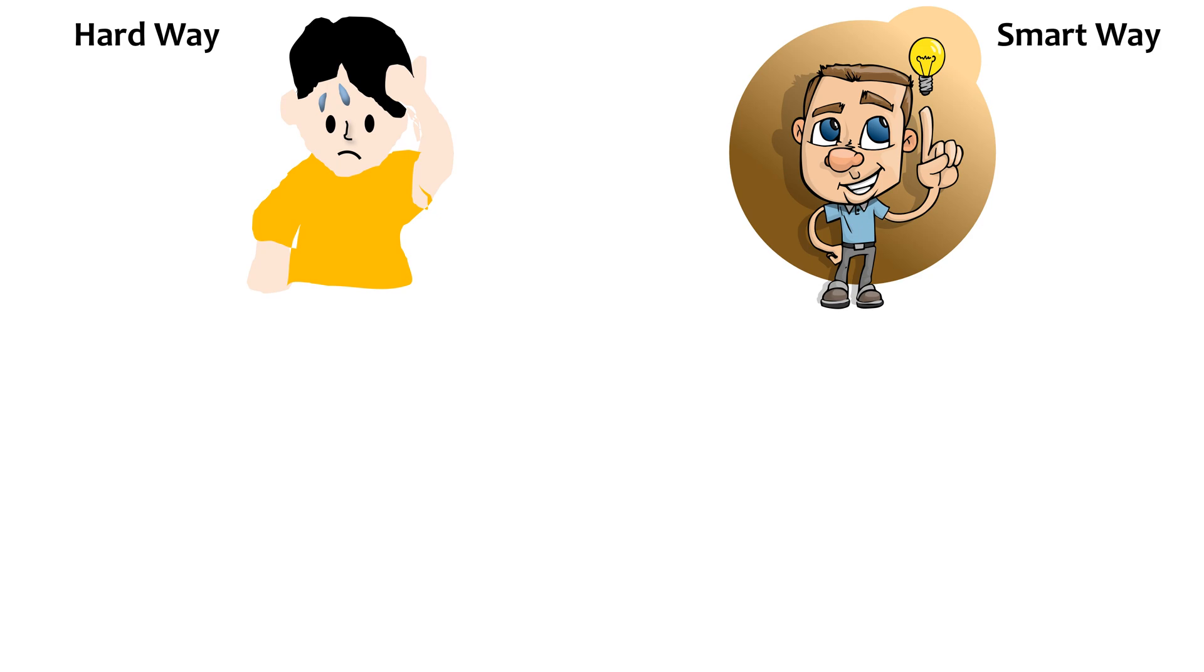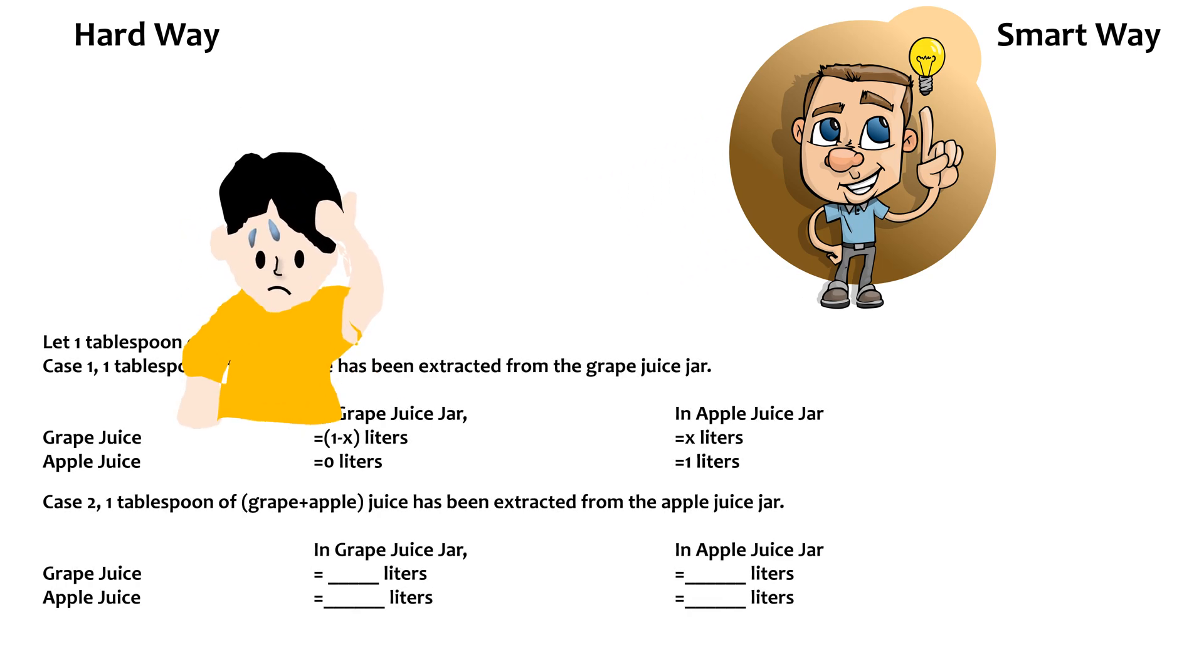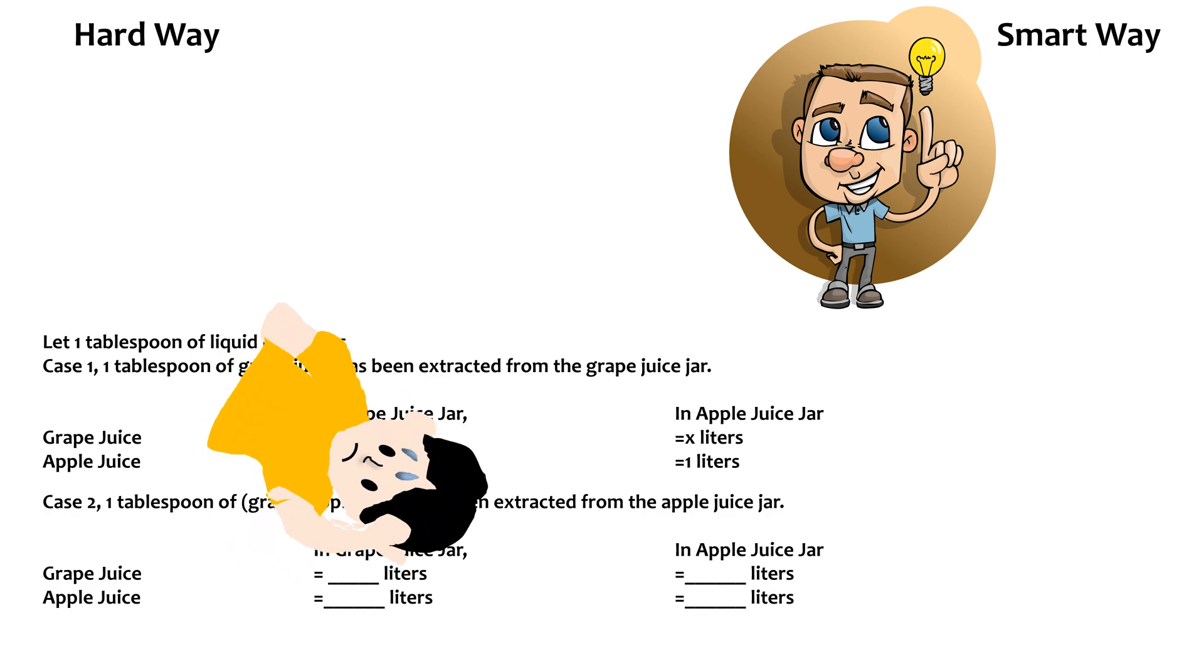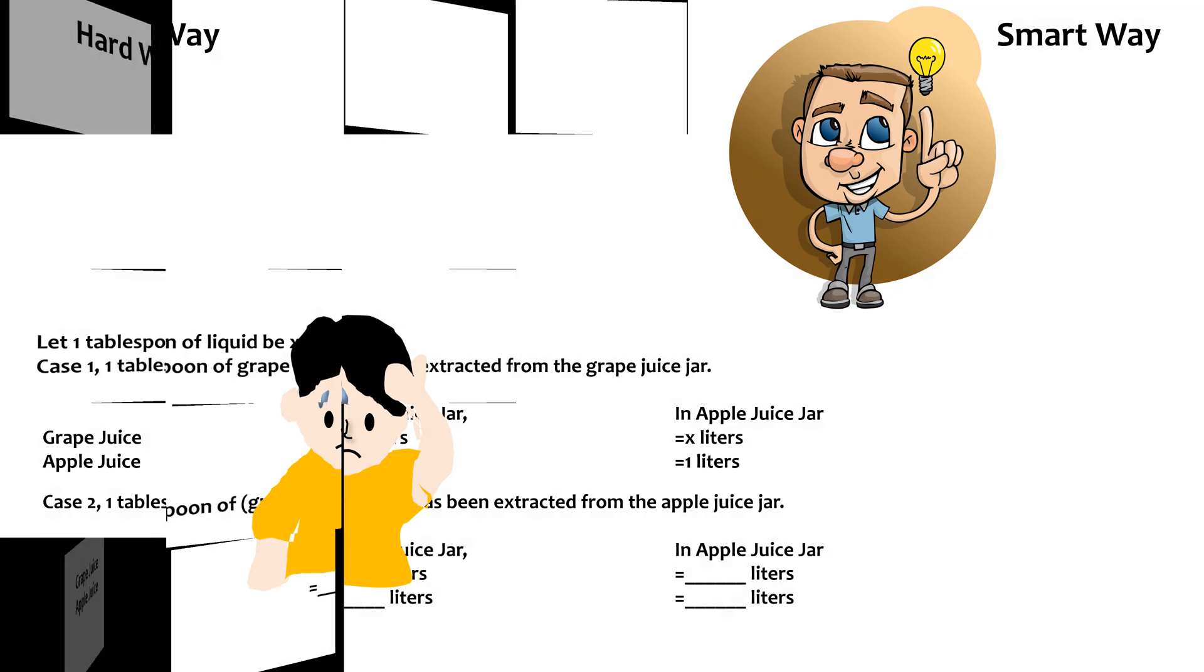By messy calculations, I mean something like this. It may be tempting to solve the question like this. The smart way is to use some clever logical reasoning to arrive at the solution. So, what's the reasoning?